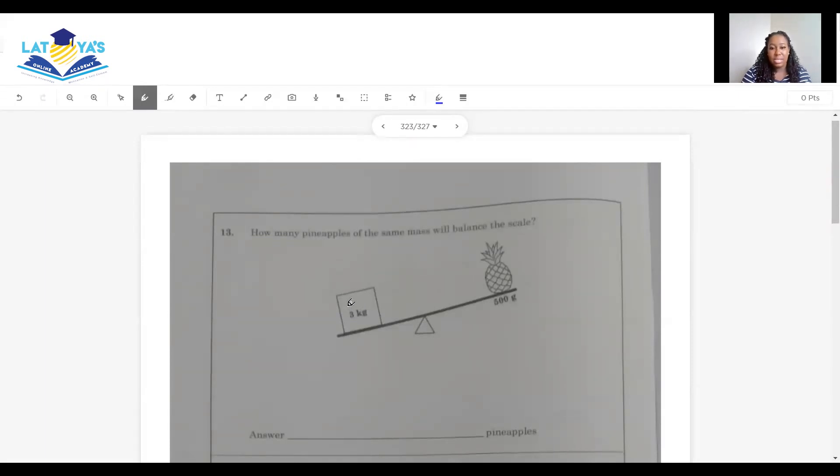So here we have a box, and the weight of this is 3 kilograms. So we know that 1 kilogram is equal to 1,000 grams. So the 3 kilograms would be equal to 3,000 grams. And here we have the pineapple. One pineapple weighs 500 grams. So how many pineapples do I need? I'll have to divide 3,000 by 500. These two zeros could cancel these two zeros. 5 into 5, 1. 5 into 30 is 6. So I would need a total of 6 pineapples to balance the scale.